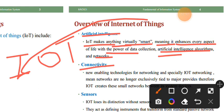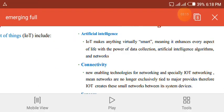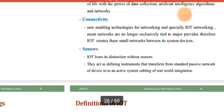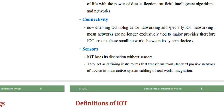Connectivity is a key feature of IoT. We follow legal technology for networking, especially IoT networking. Networks are no longer exclusively tied to major providers. IoT creates small networks between system devices — small interconnected cultures within IoT.